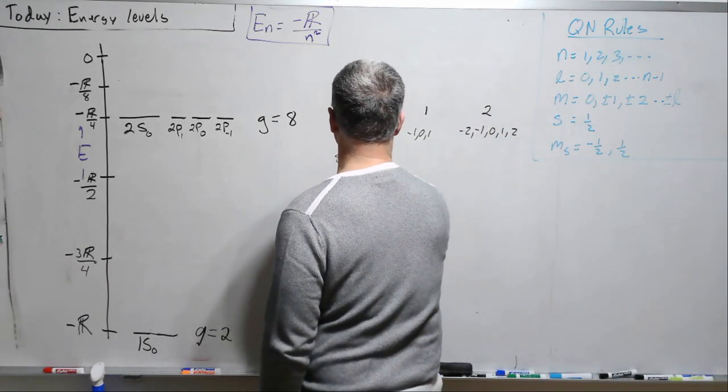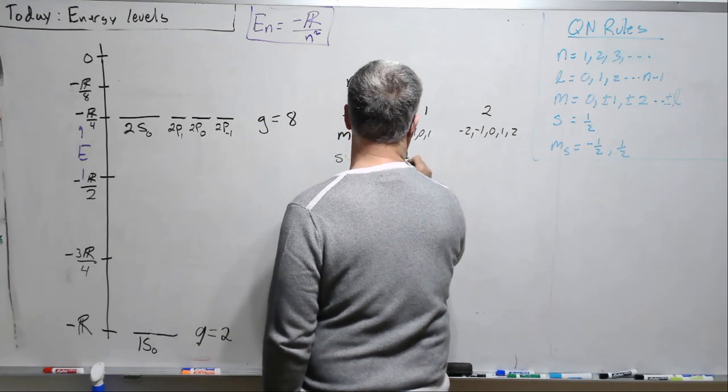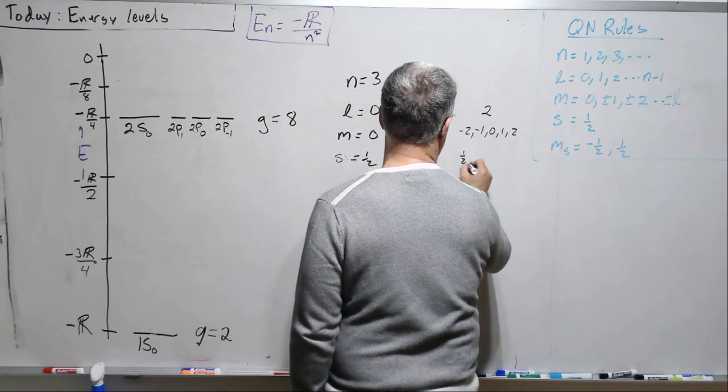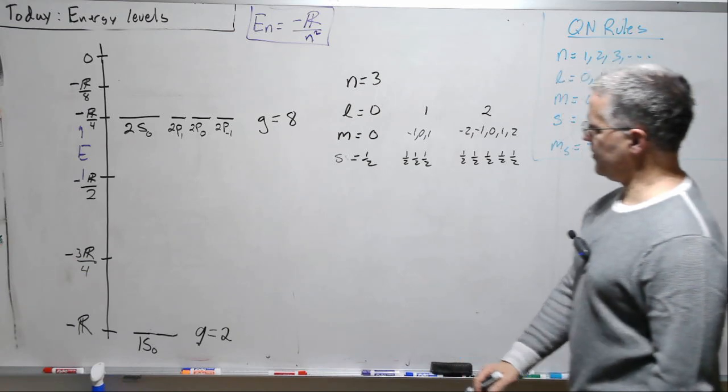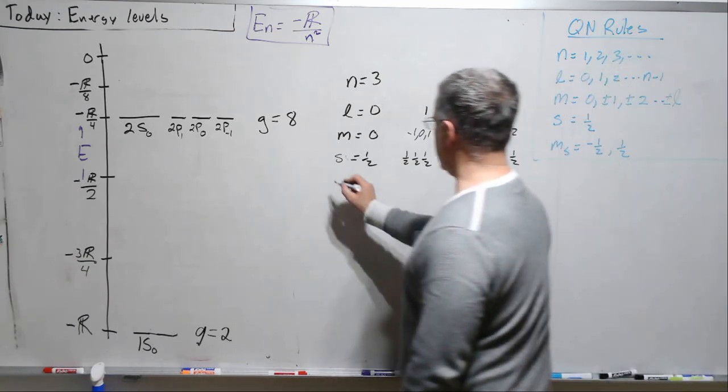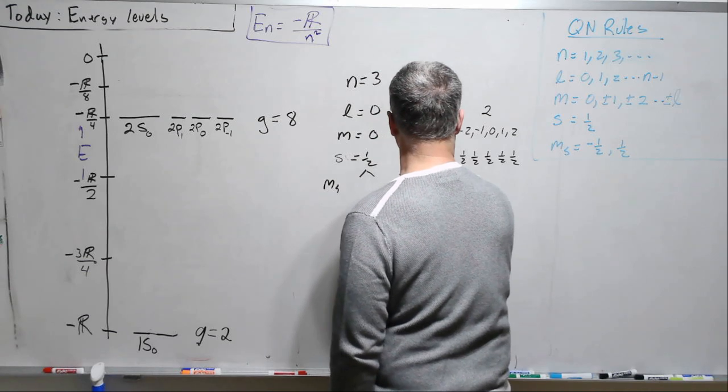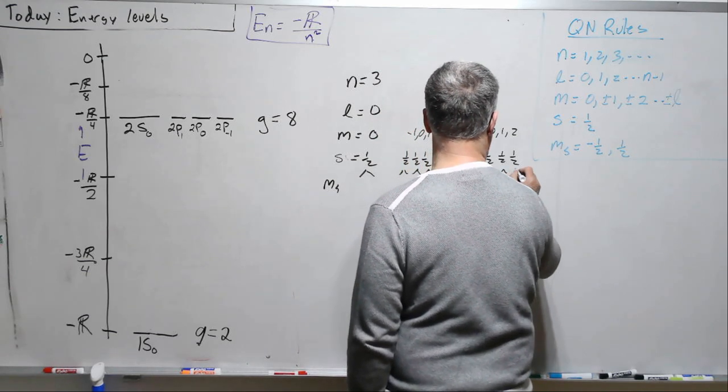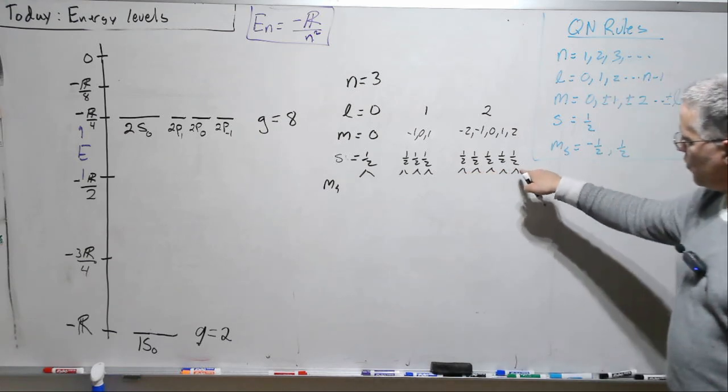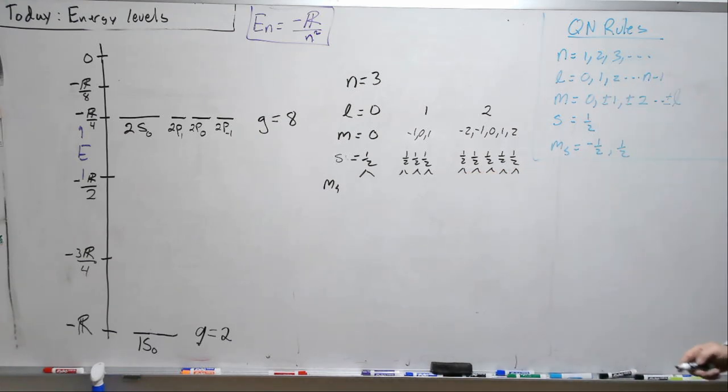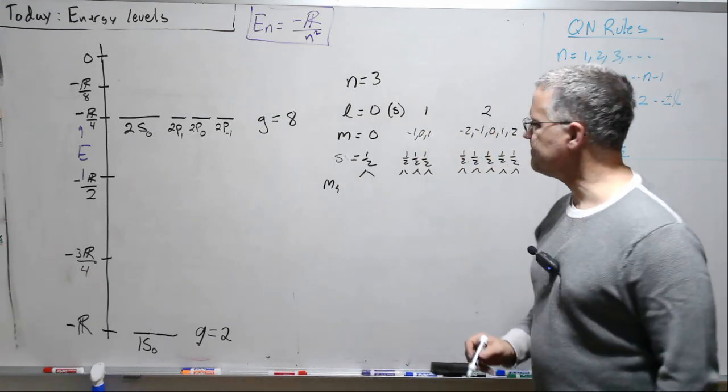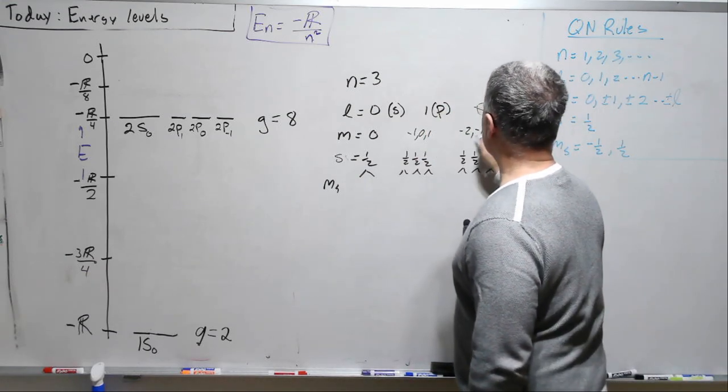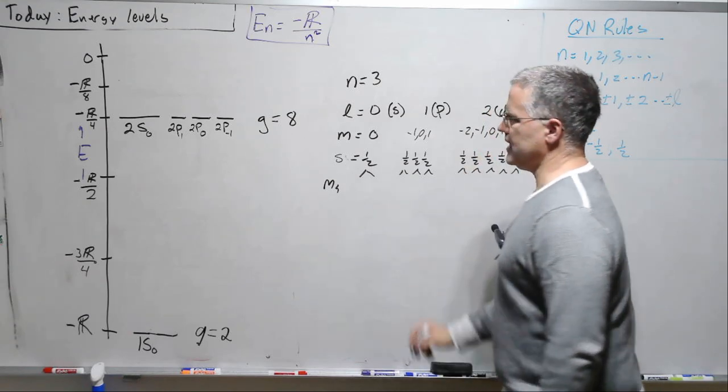s equals 1/2 all the way through. And again, I won't write these, but for each one of these, ms could be plus 1/2 or minus 1/2. These are S subshells, these are P subshells, and these are D subshells.